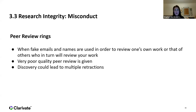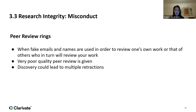Peer review rings — this is just to make you aware of how difficult editors' work actually is. Sometimes fake emails and fake names are used to review one's own work, or perhaps a friend's work so they can review yours in return. This usually results in very poor quality peer review, and if discovered it could lead to multiple retractions. Something like this happened in China last year where hundreds of papers were retracted. This often happens when editors have difficulty finding reviewers and ask authors to recommend someone, which is when fake emails get submitted.